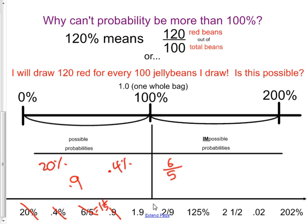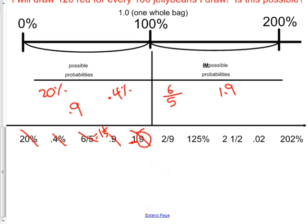9 tenths is greater than 0 and less than one whole. So that is possible. 1.9, you can see we have more than one whole. So that is impossible. 2 ninths is greater than 0 ninths. And it's less than 9 ninths. 9 ninths would equal one whole. So that is possible.